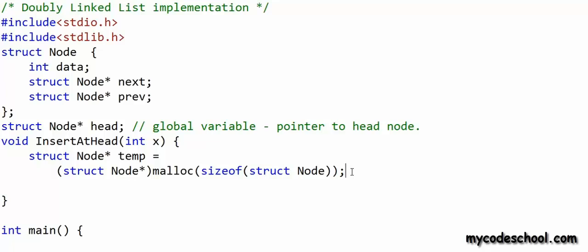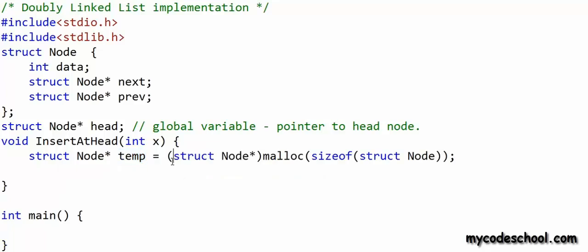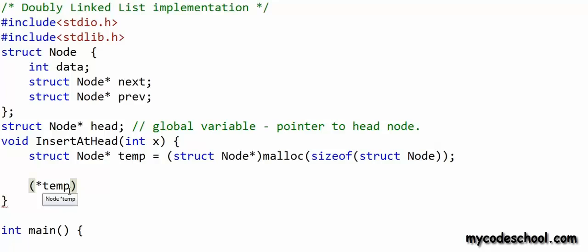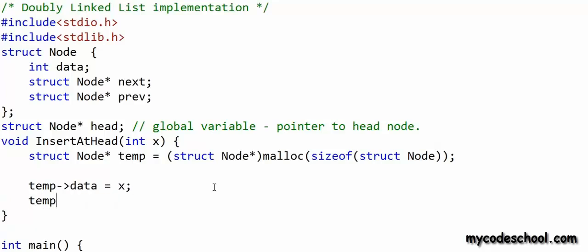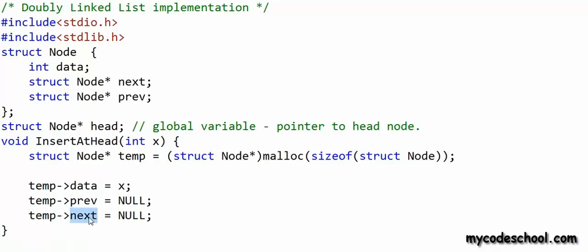Access to heap memory always happens through a pointer variable. With this malloc statement, I have created a node in dynamic memory that can be referenced through a pointer-to-node variable, which I named 'temp'. I can use this pointer variable to fill in values in various fields of the node. I can dereference using the asterisk operator to access fields like data, prev, or next. There is an alternate syntax: instead of (*temp).data, we can simply write temp->data. Similarly, temp->prev and temp->next. Let's set both as null.